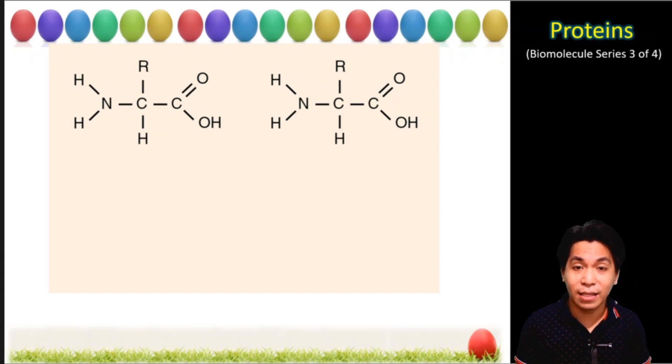How do amino acids connect together to form a protein? Let's take a look. We have here two examples of amino acids. Now amino acids connect together similar to the previous biomolecules which is via condensation reaction. The hydroxyl from the carboxyl group of the first amino acid will be removed similar to the hydrogen from the amino group of the second amino acid. Then the two molecules combine together to form water.